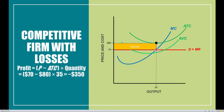Step number four is to find the ATC. What we notice here is that our ATC is going to be higher than the price. We find the ATC curve and notice that the ATC at the profit maximizing intersection is going to be $80. So for every unit that we sell, it costs us $80, but we're only receiving $70, meaning every unit we sell we're losing out on $10. Step number five is to take these numbers and insert them into our profit equation.